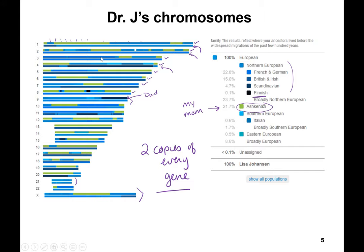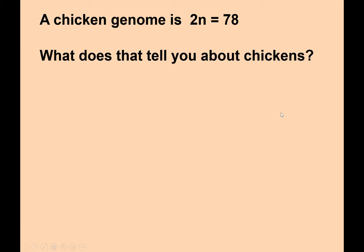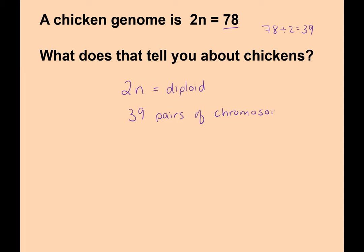Let's make sure you understand these concepts. If I told you a chicken genome is 2n equals 78, what does that tell you about chickens? So 2n tells you that chickens are diploid — they have two copies of every chromosome. Since the diploid number is 78, if you take 78 divided by 2, chickens have 39 pairs of chromosomes. Just like us, chickens get 39 chromosomes from their mom and 39 from their dad to make a total of 78.